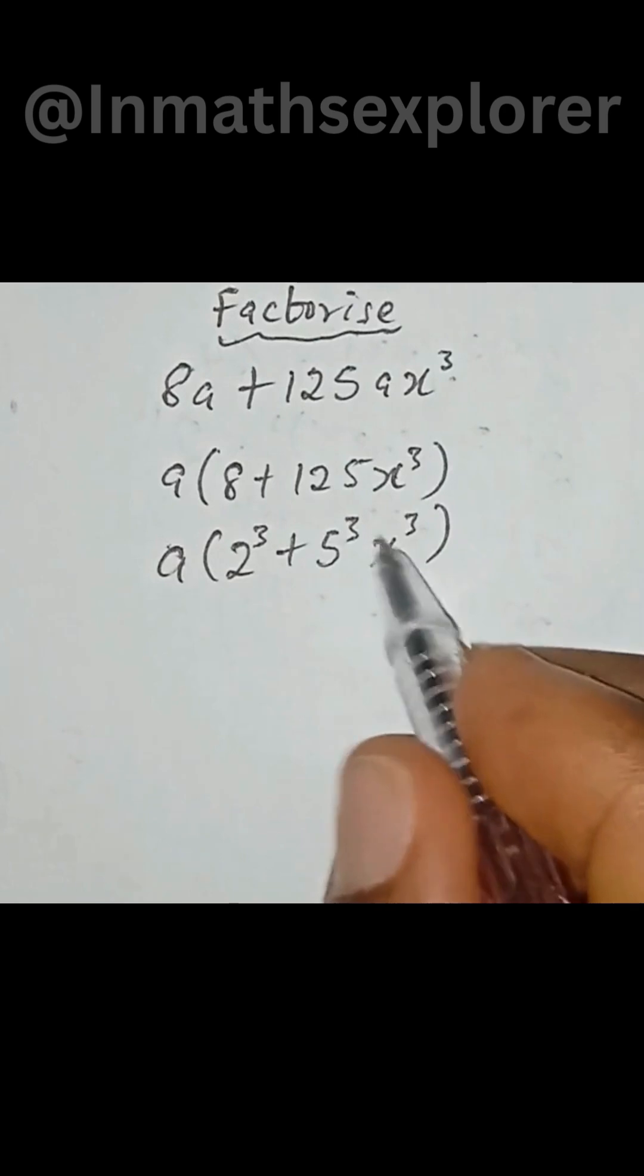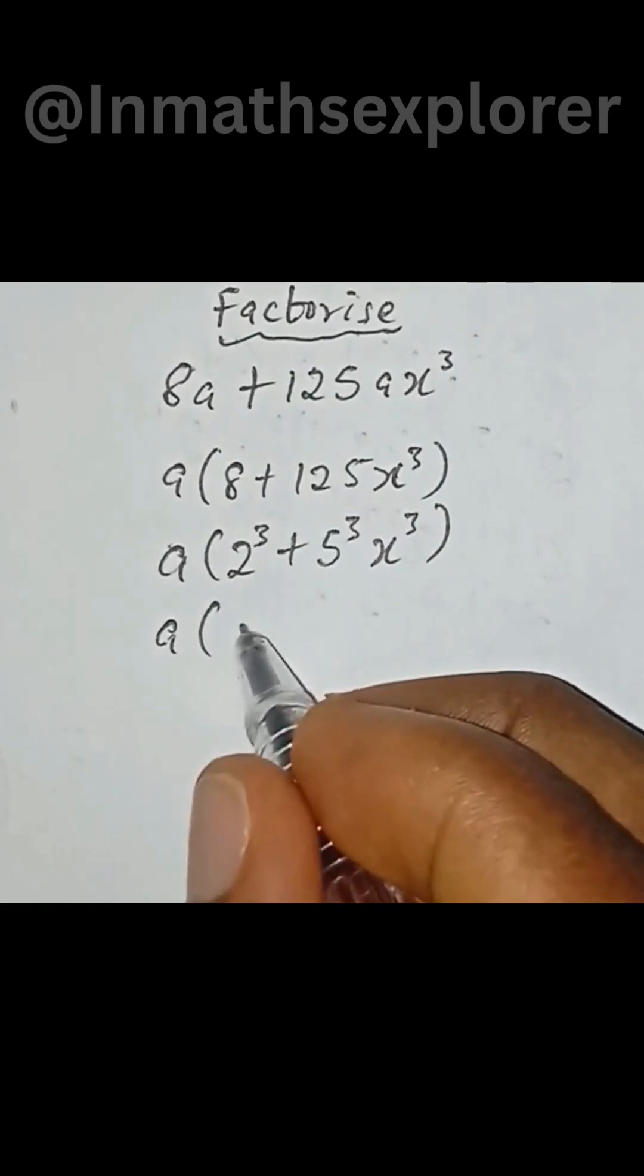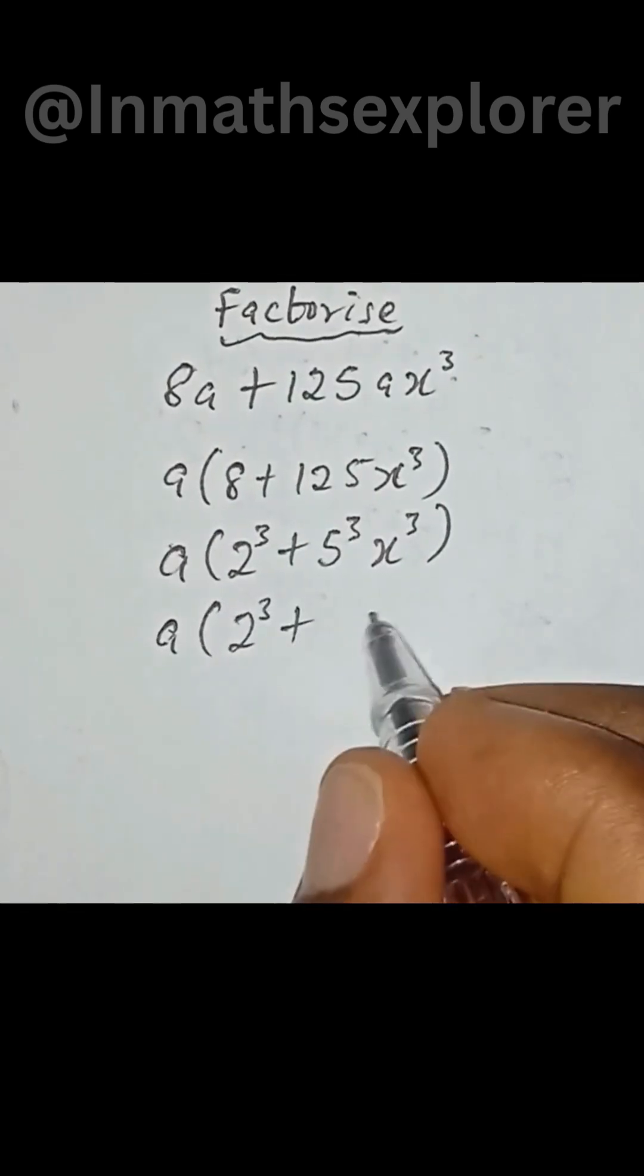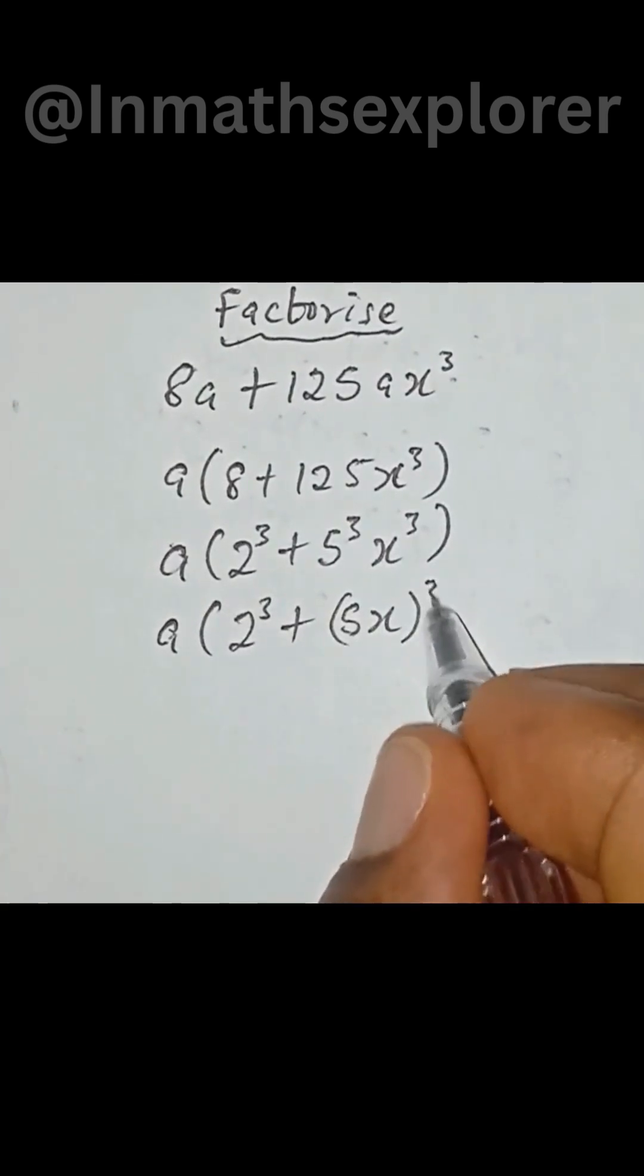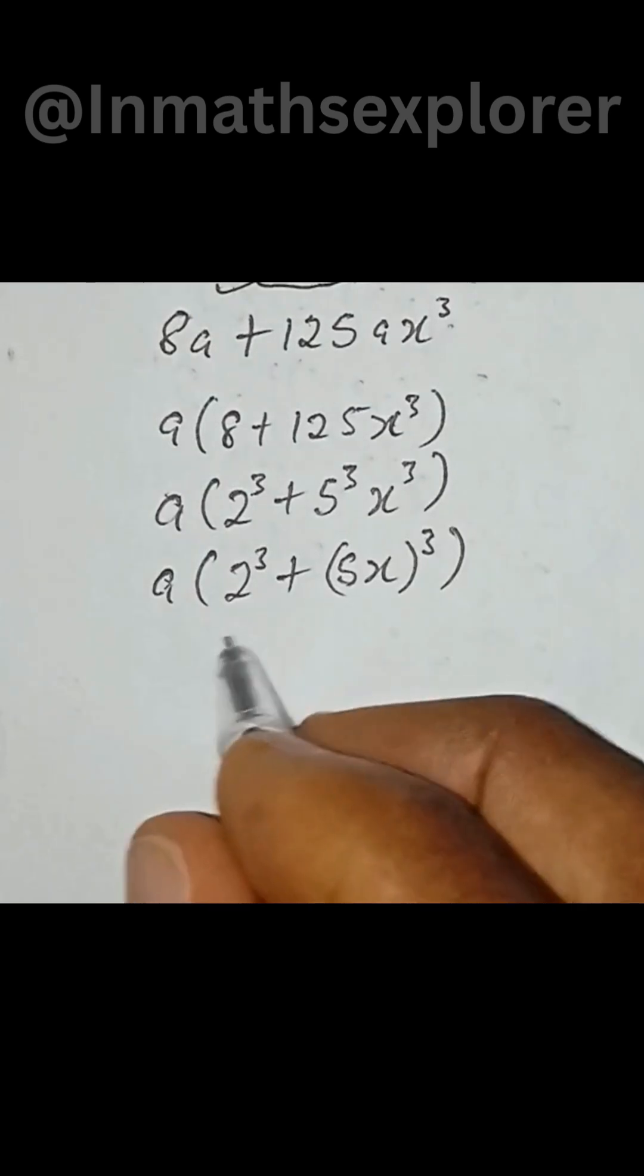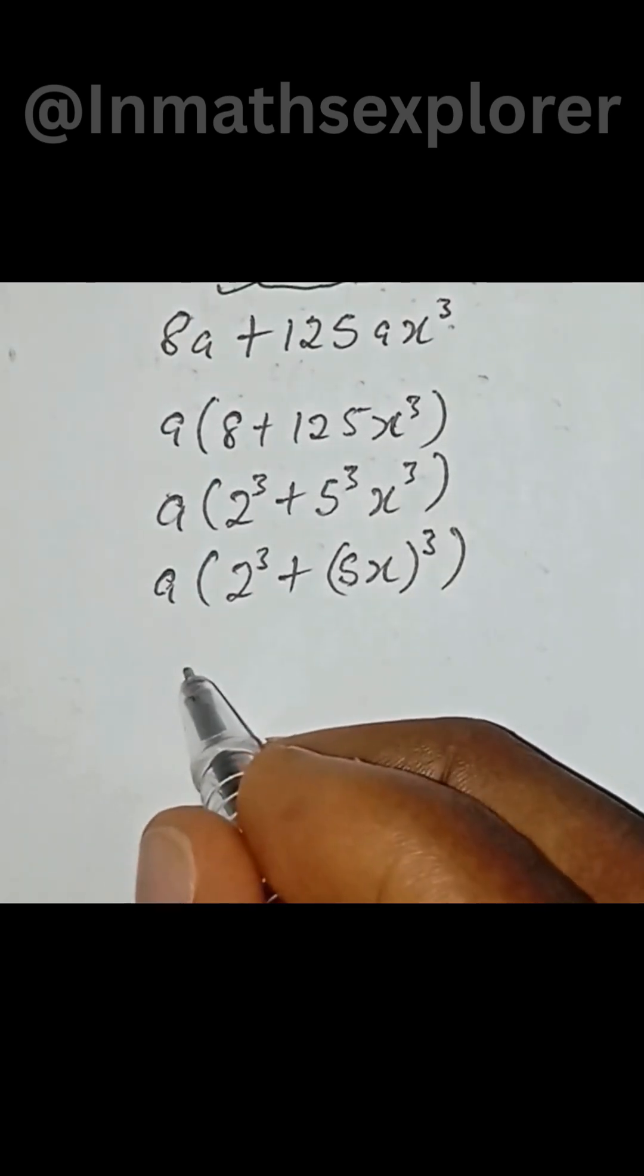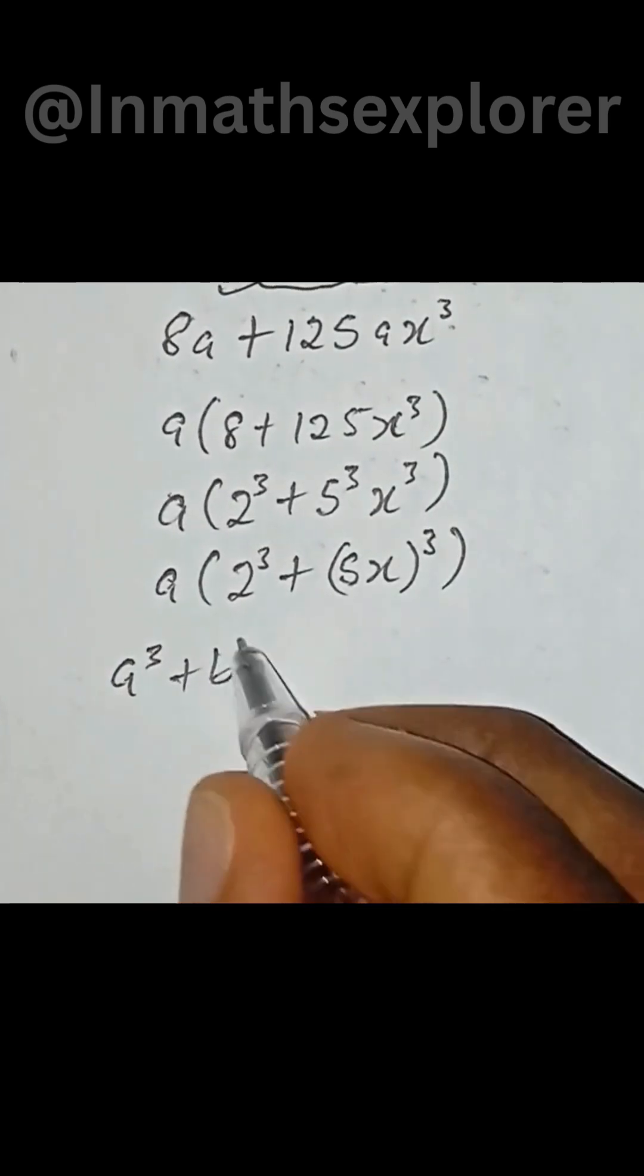Now we can put this as a into bracket 2 to the power of 3 plus 5x to the power of 3. Now this is in the form of sum of 2 cube which implies a cube plus b cube.